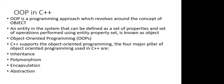OOP stands for Object-Oriented Programming. C++ supports object-oriented programming using four major pillars: inheritance, polymorphism, encapsulation, and abstraction. We will be dealing with all these pillars through practical examples and coding in coming lectures.